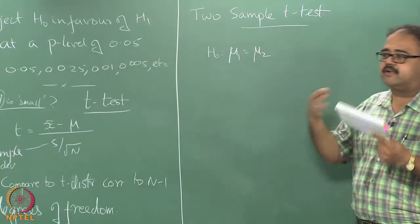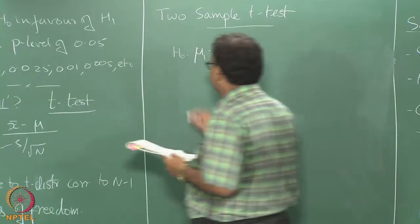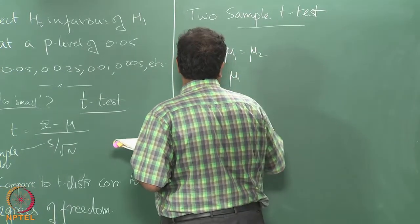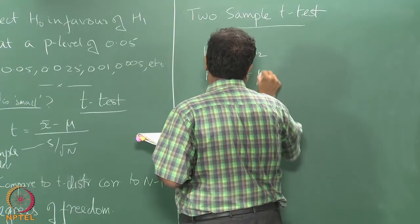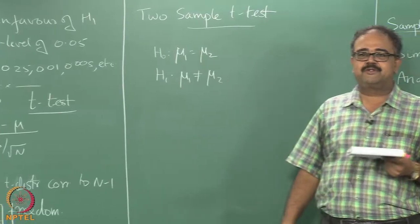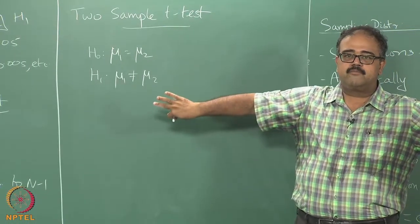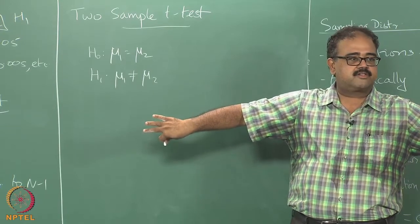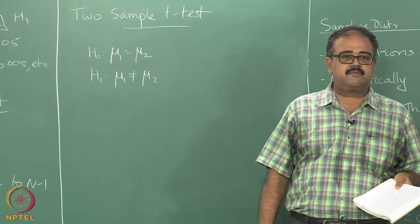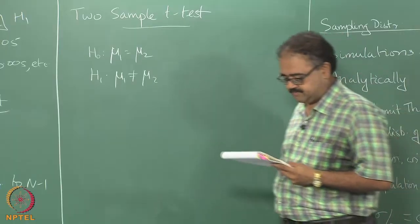The null hypothesis is yes, they are drawn from the same distribution, so mu_1 equals mu_2. The alternate hypothesis is mu_1 not equal to mu_2. Let us do a two-tailed test — this is called two-tailed because we are going to look at both ends of the distribution. The greater-than or less-than cases were called one-tailed or single-tailed because we look only at one end of the distribution.